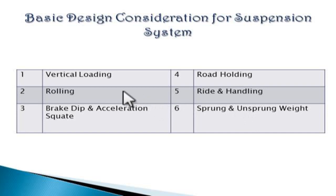The second consideration is rolling. The center of gravity of the vehicle is taken into account — it should not be considerably above the ground so as to avoid rolling action while taking a turn. This is because when the vehicle takes a turn, centrifugal force acts outward from the center of gravity and road resistance acts inward, which causes the rolling phenomenon. This has to be taken into account in the design of the suspension system.